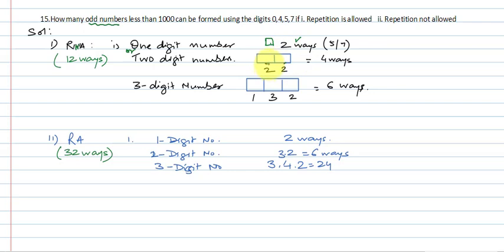Since repetition is not allowed and one digit has already been used here, we have two choices left. Zero won't come here, so four or the other number. That means it can be filled in two ways, not zero. So this will be 2 into 2, that is four ways.